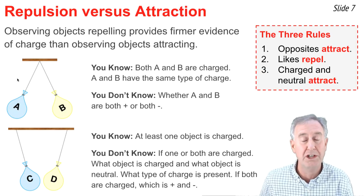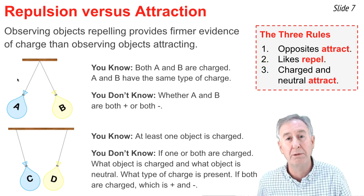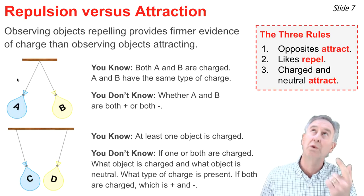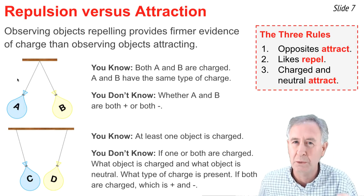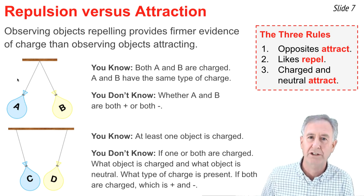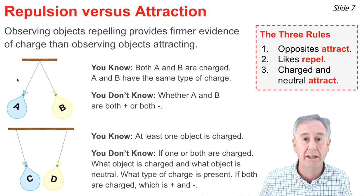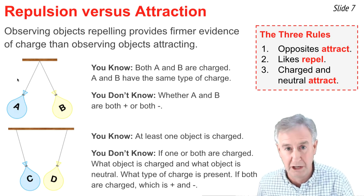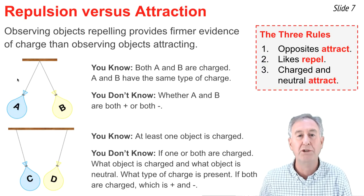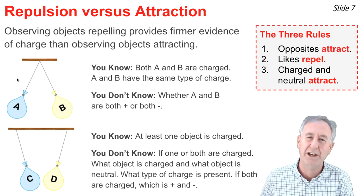Balloon C could be charged and balloon D could be neutral, according to rule three. Or balloon C could be charged and balloon D could also be charged with the opposite type of charge, according to rule one. You don't know which it is, because the word 'attract' appears twice in the rules. Observing attraction provides much less information about the charges of the objects compared to observing repulsion.